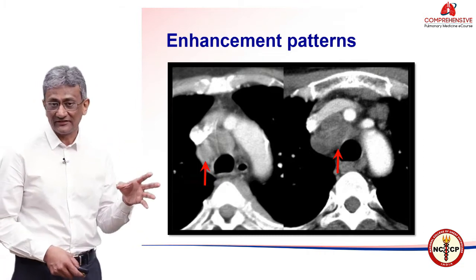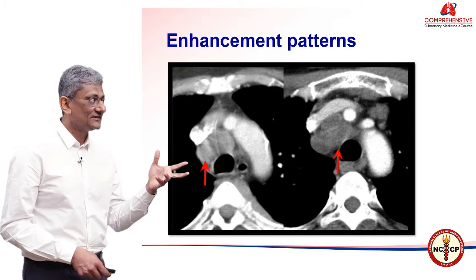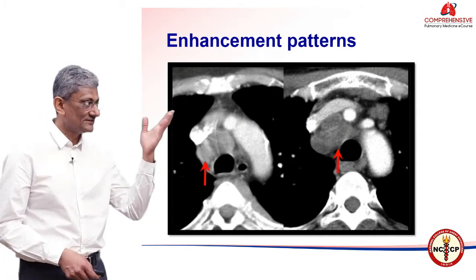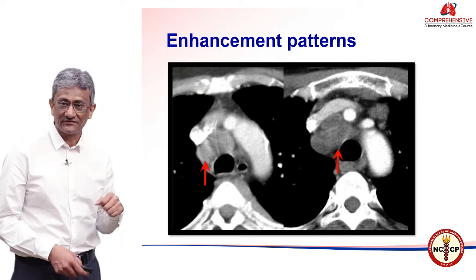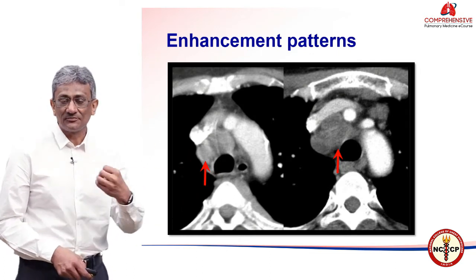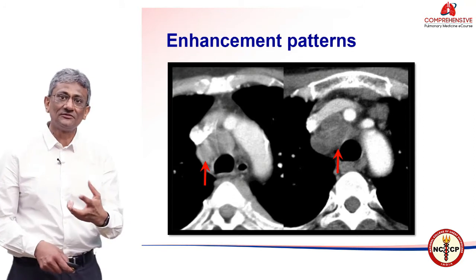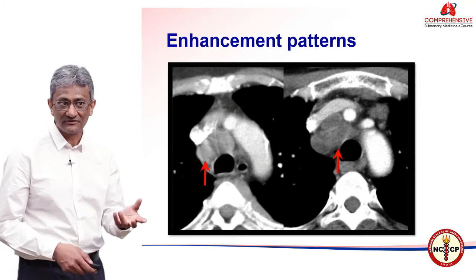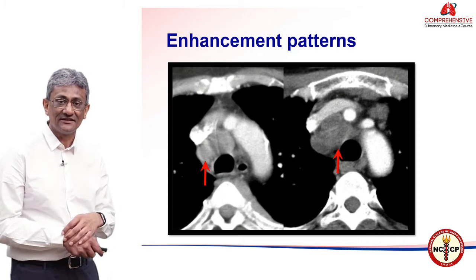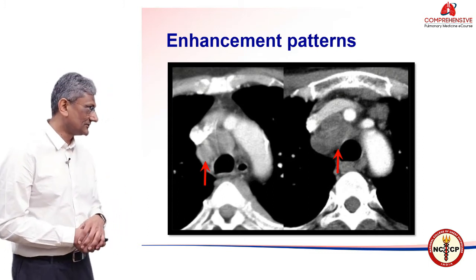Whereas the lymph node on the right shows necrosis — only the periphery is enhancing, the rest of the node is not picking up the dye. The presence of necrosis in the appropriate setting in our country often allows us to make a diagnosis of tuberculosis in the young patient, or perhaps metastatic disease in the elderly if the patient has a known primary.